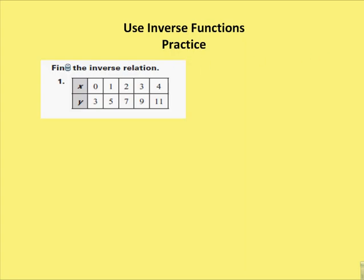The first problem asks us to find the inverse relation between x and y. We want to create an equation based on the information given. We see that when x = 0, y = 3; when x = 1, y = 5; and when x = 2, y = 7. We need to find a pattern. When x = 0, we're adding 3, so y equals something plus 3.